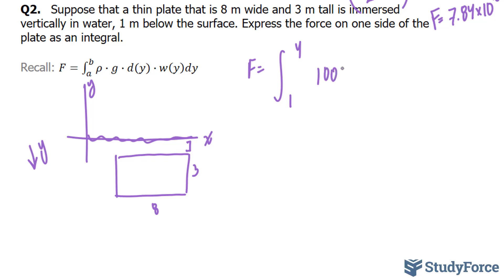Rho stays the way it is, it's 1,000, gravity is the same. Our function, d(y), will be y still, and our width, this time is 8, with respect to dy.